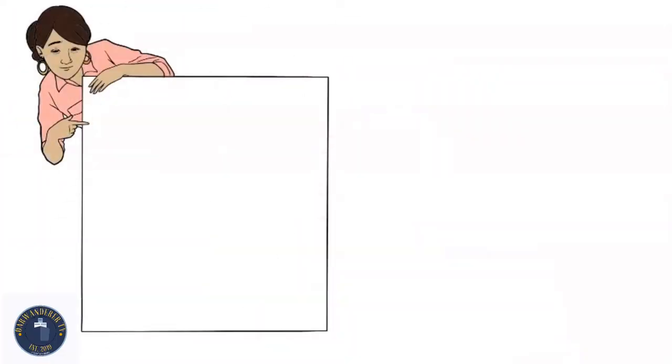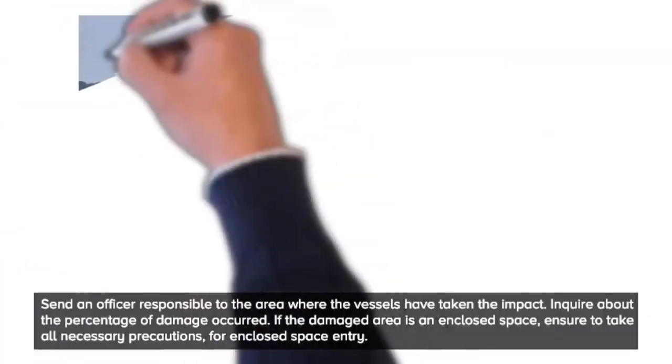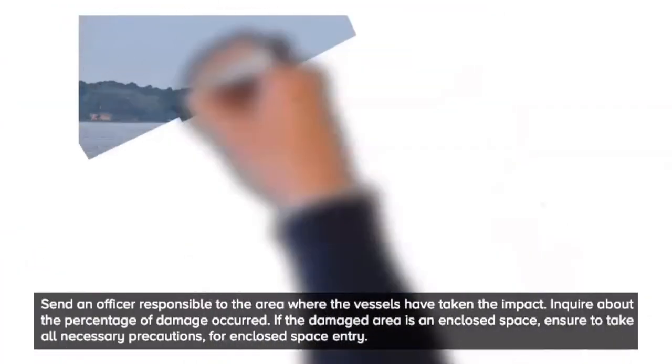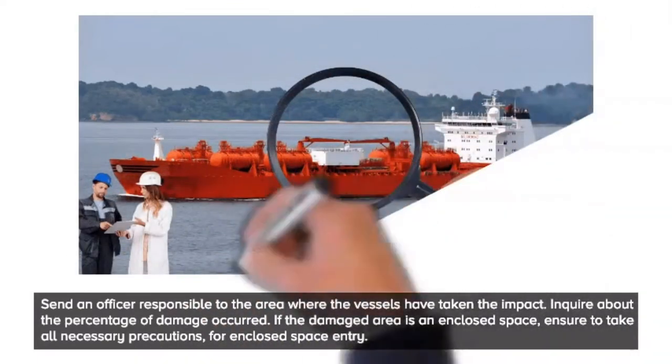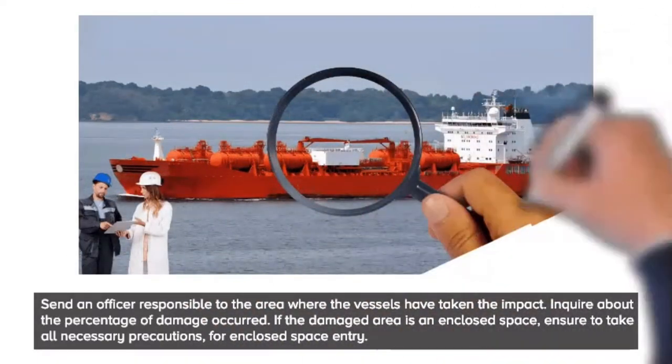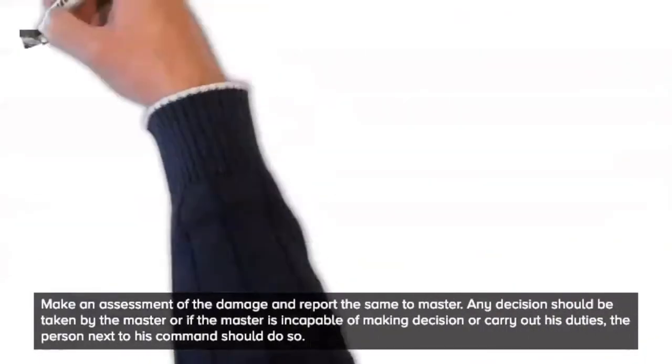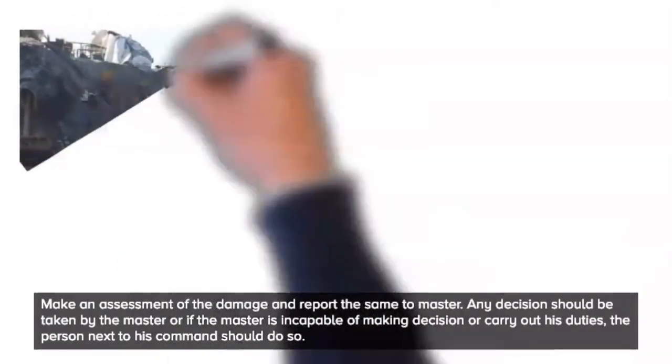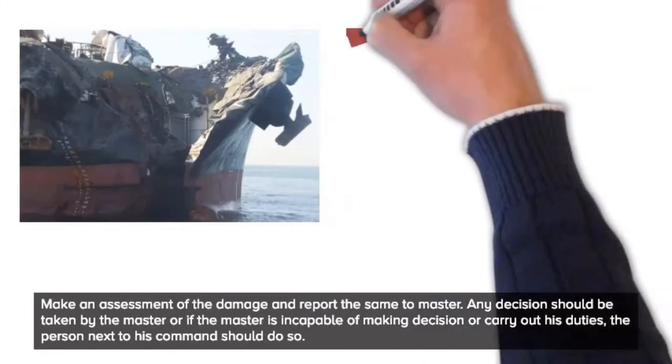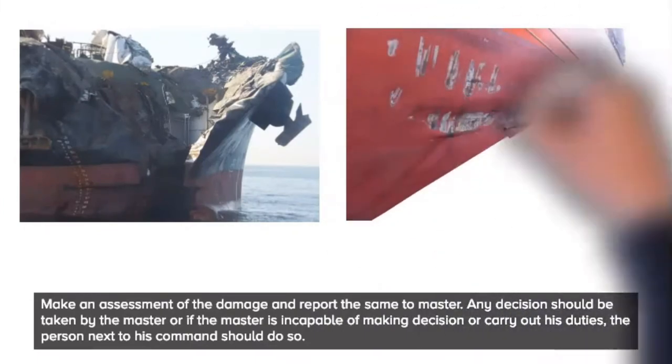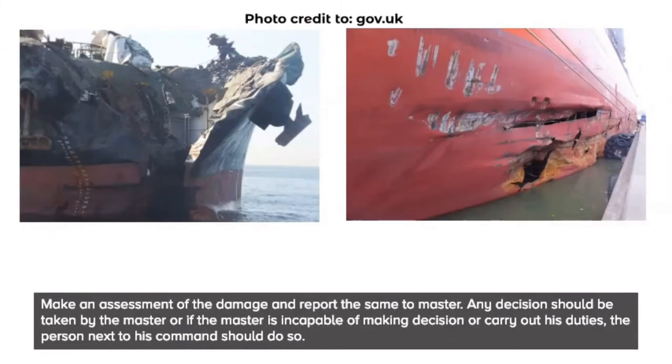5. Assess the damage. Send an officer responsible to the area where the vessels have taken the impact. Inquire about the percentage of damage occurred. If the damaged area is an enclosed space, ensure to take all necessary precautions for enclosed space entry. Make an assessment of the damage and report the same to master. Any decision should be taken by the master or if the master is incapable of making decision or carry out his duties, the person next to his command should do so.